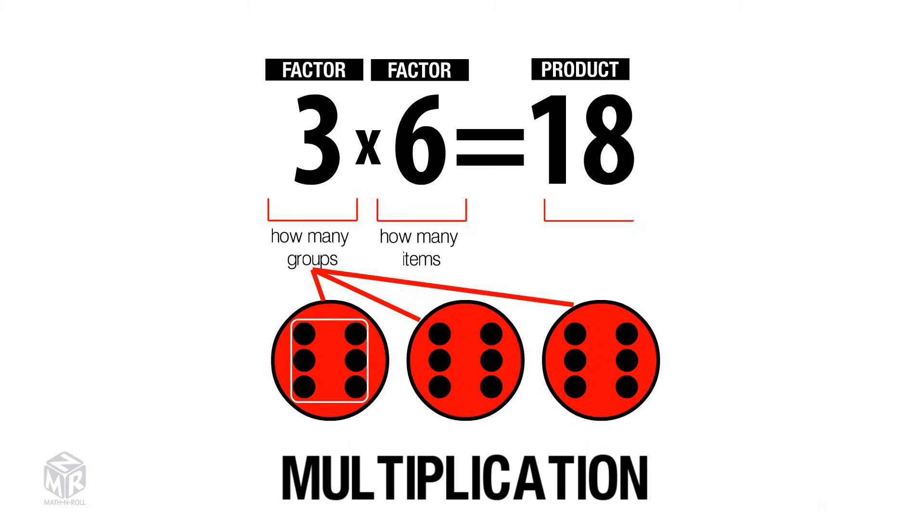18 is our total. 6 plus 6 plus 6 equals 18. We have three groups with six items in each group. So 3 times 6 equals 18.